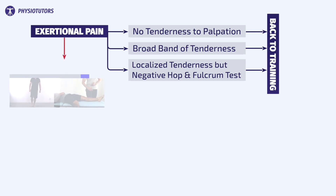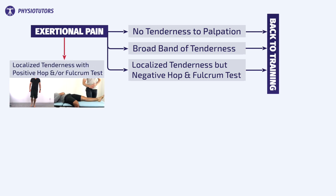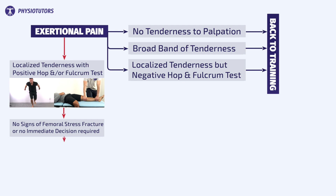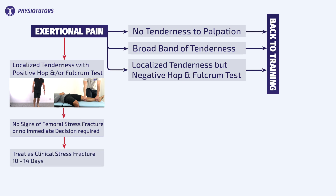Number two: if localized tenderness is found and either the hop test or the fulcrum test are positive, then one has to look at signs indicating a femoral stress fracture. If signs are absent, the patient is treated as if he or she had a stress fracture for 14 days.